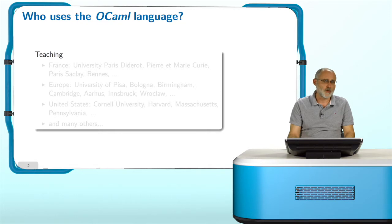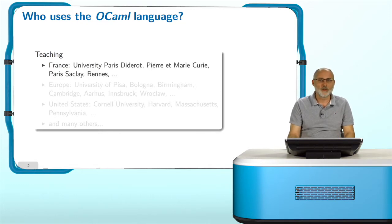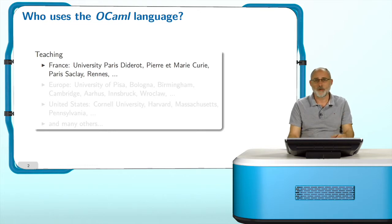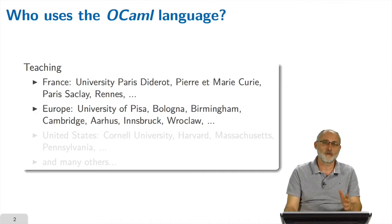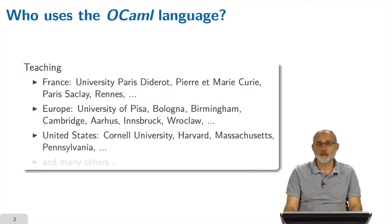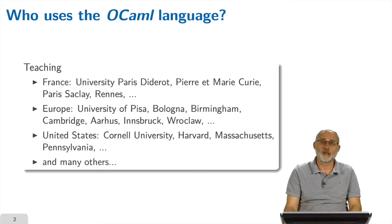So who uses the OCaml programming language? Of course, it is used in teaching in many universities, not only in France where the language was born. In Europe, various universities in different countries — in Italy, Denmark, Poland, Austria — and in the United States in prestigious places like Cornell University, Harvard, Massachusetts and Pennsylvania, and many other places.